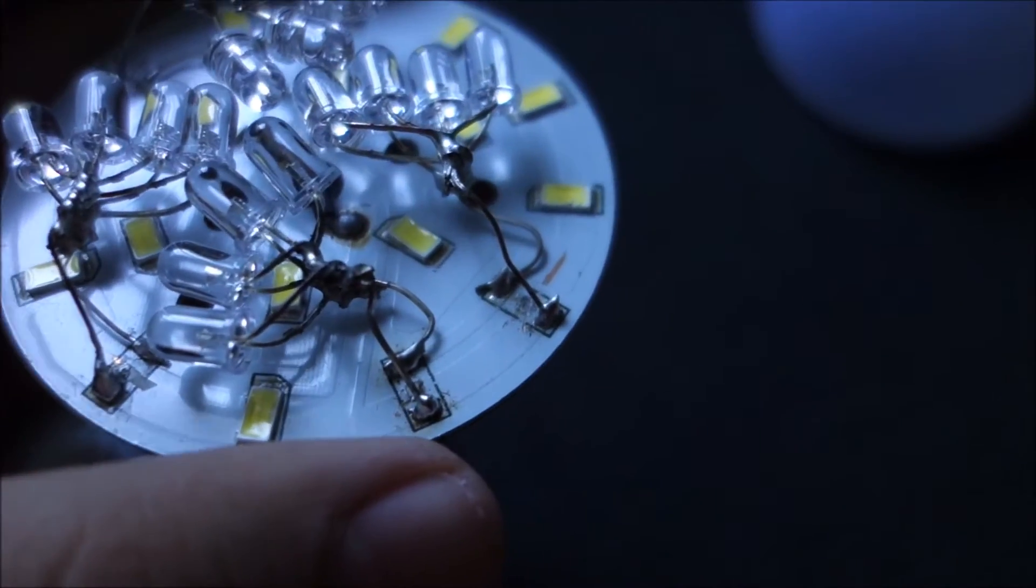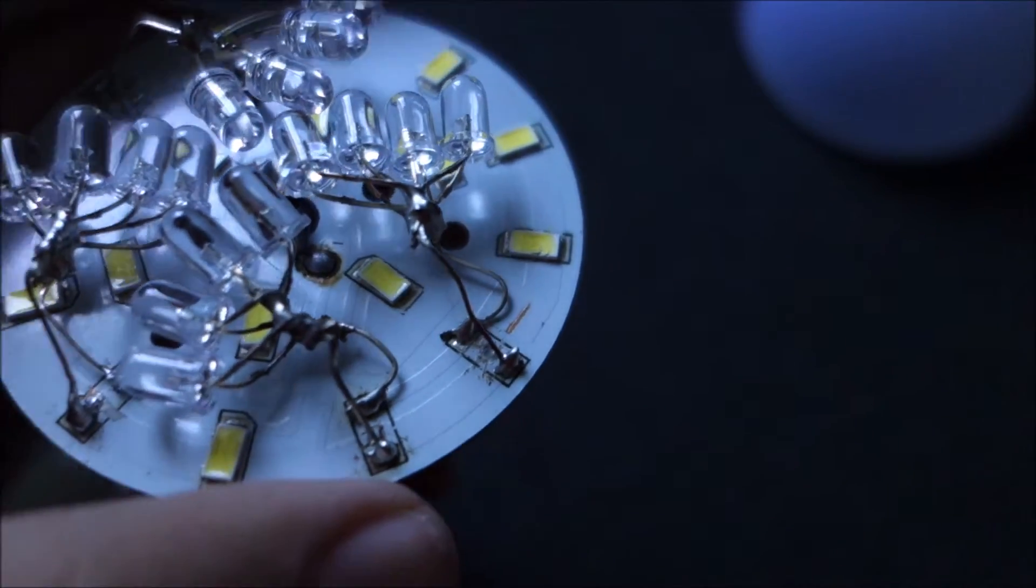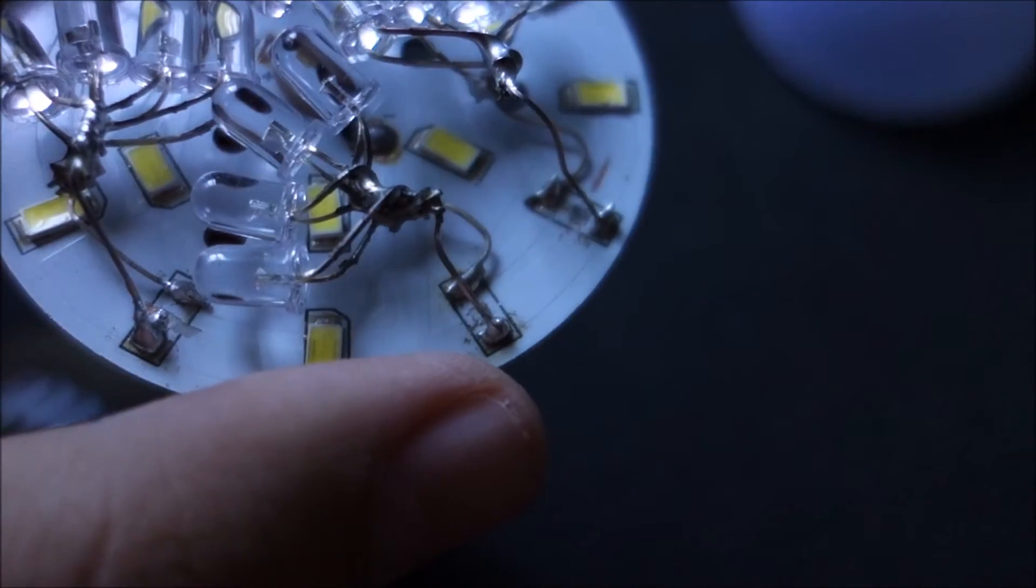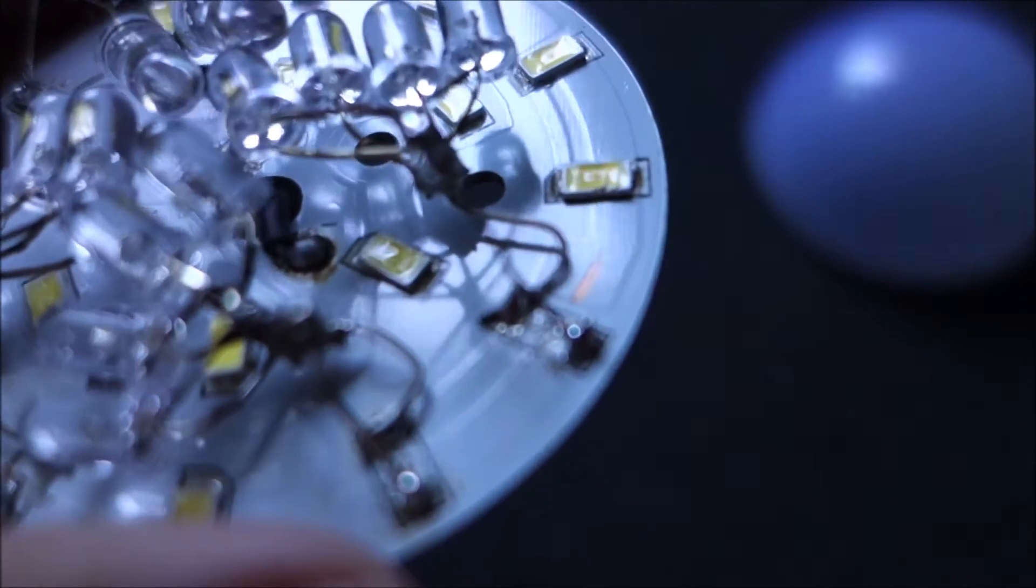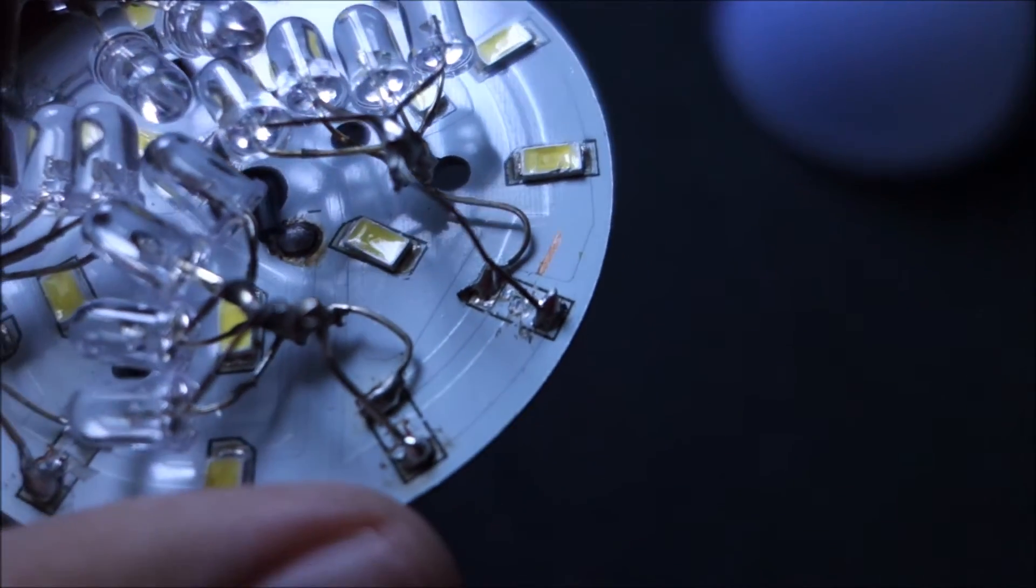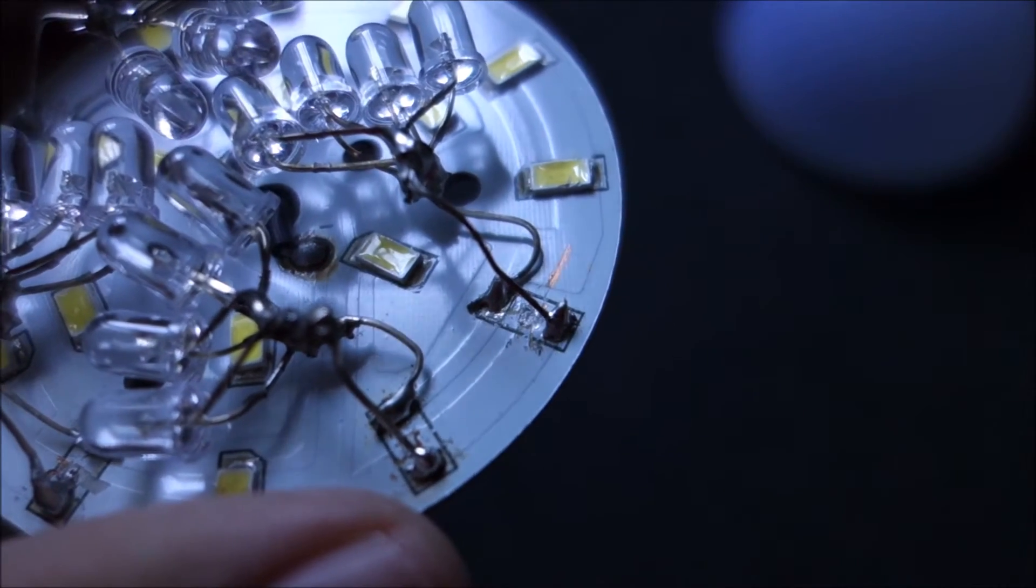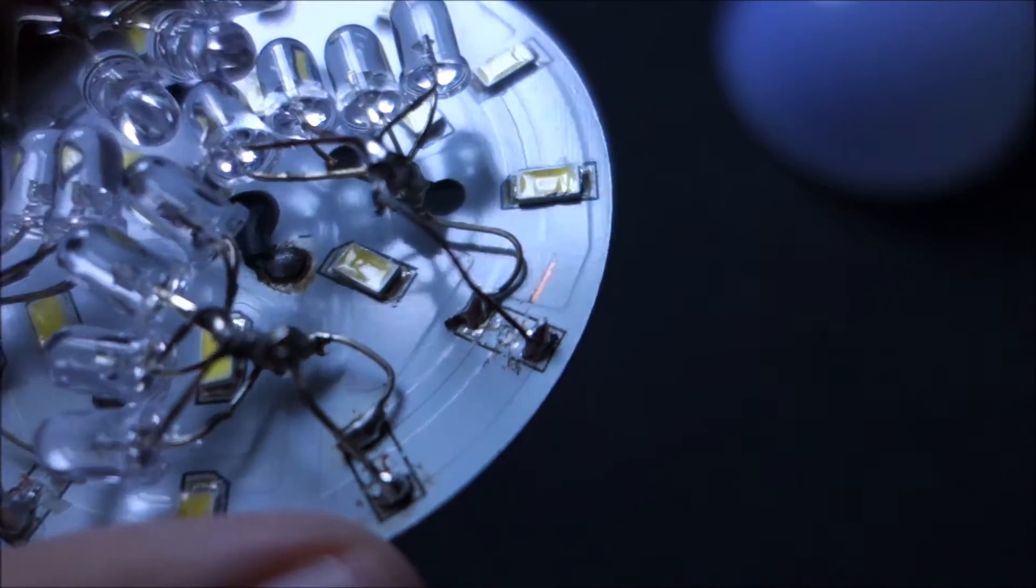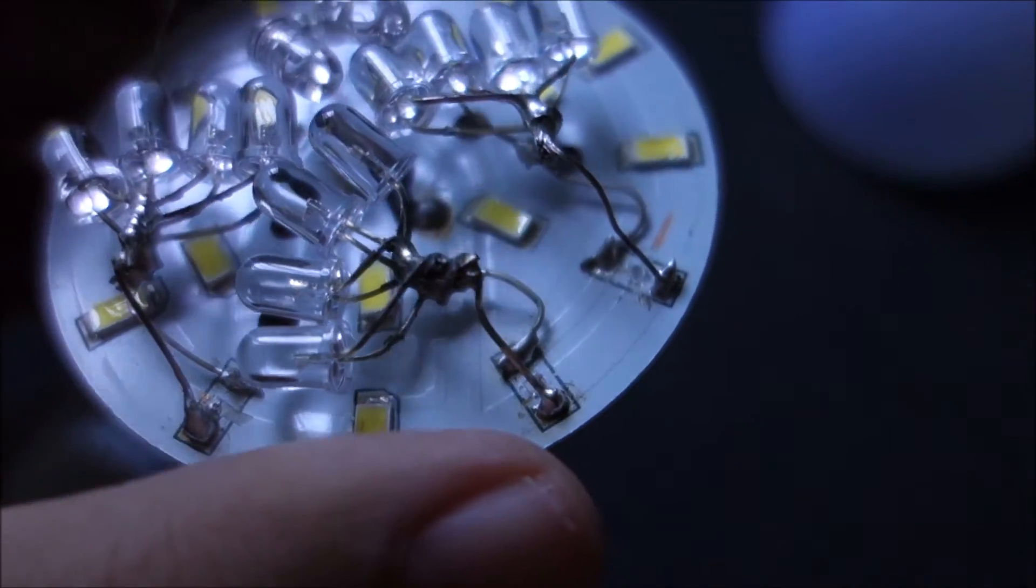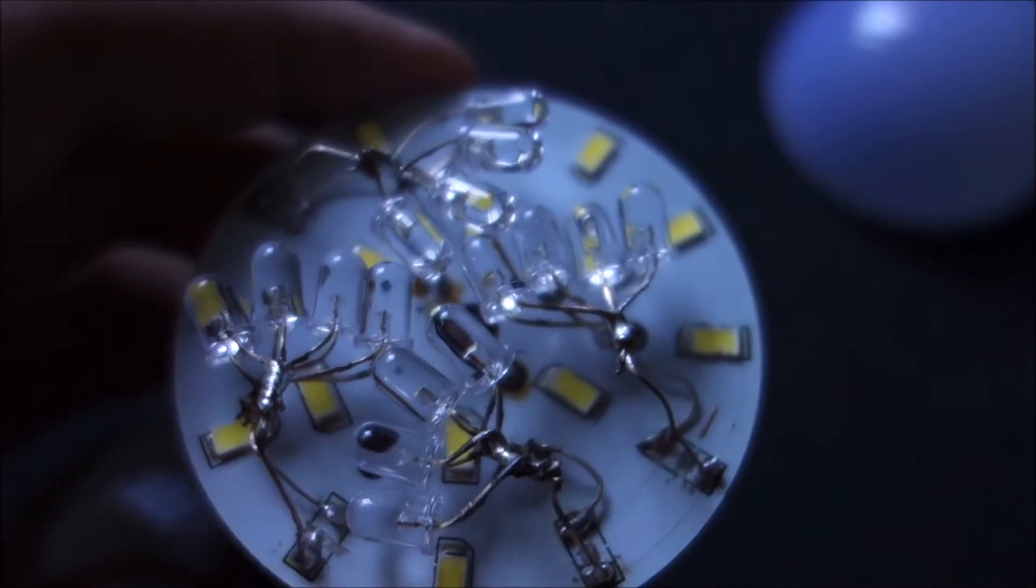So yeah, it's really hard to unsolder these original ones because this is aluminum and it will draw away all the heat, and from what I remember they have a solder point in the middle. Yes, they have. So I just pushed them off with a screwdriver. You can see the scratch marks. But yeah, that didn't do anything bad.